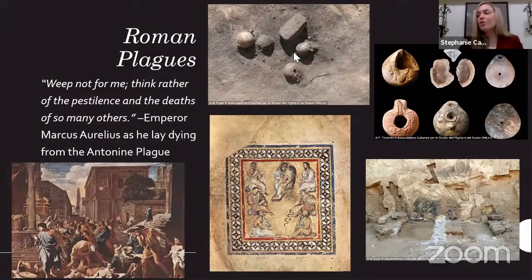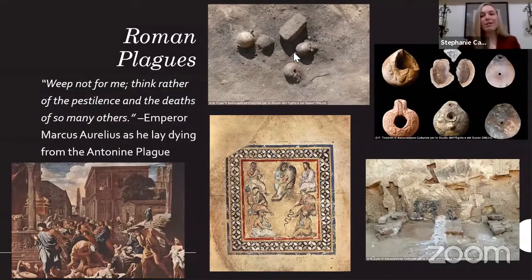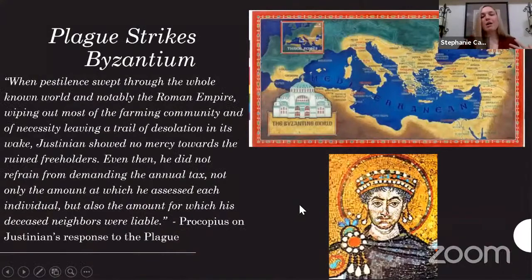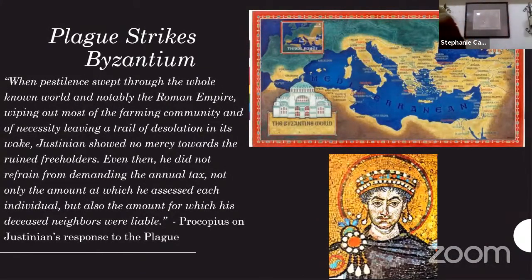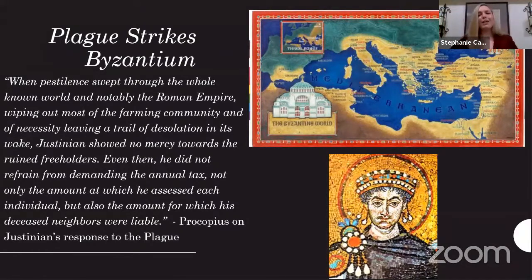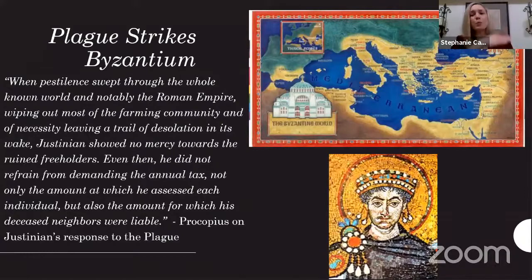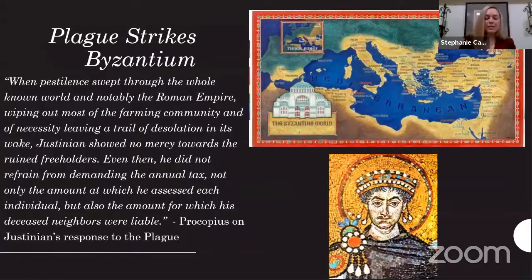Now I want to get into our very first instance of bubonic plague. We've talked about prehistoric diseases, Bronze Age, classical Greece and Rome — now I want to shift focus to Byzantium and the Justinianic Plague. After the fall of the Western Roman Empire, we see the rise of Byzantium, or the Eastern Roman Empire.